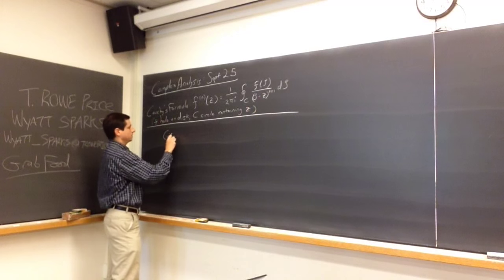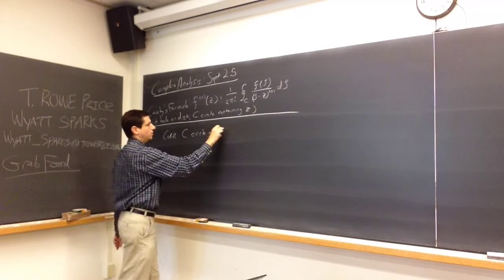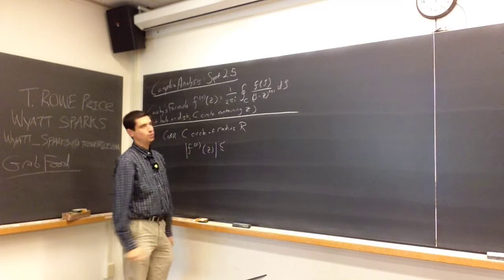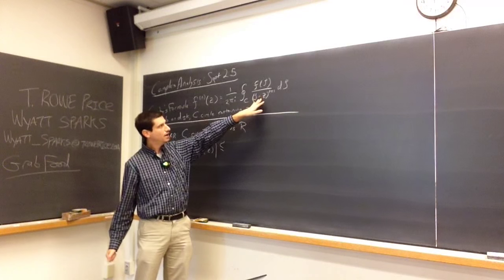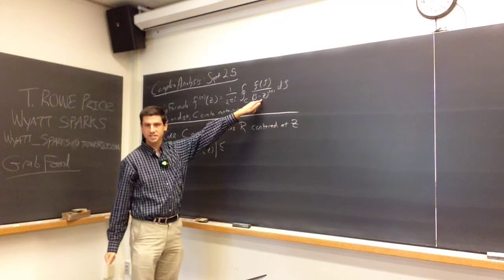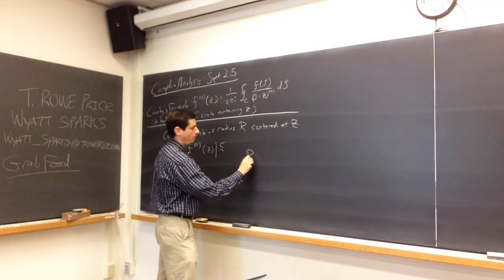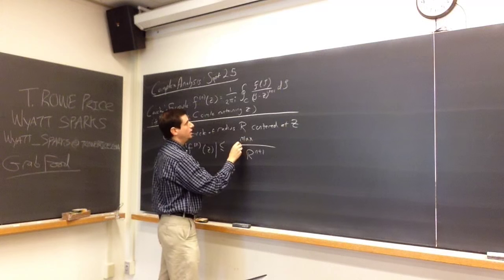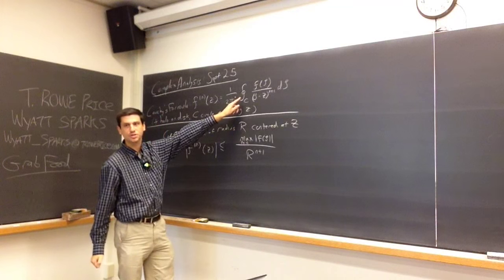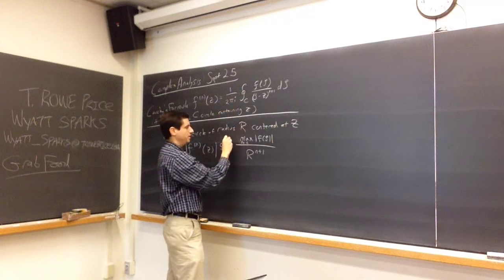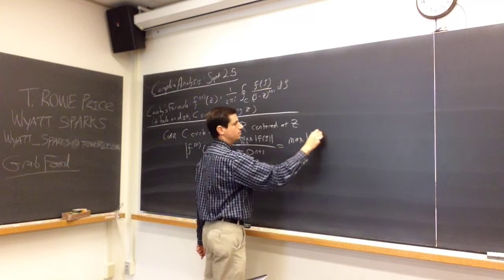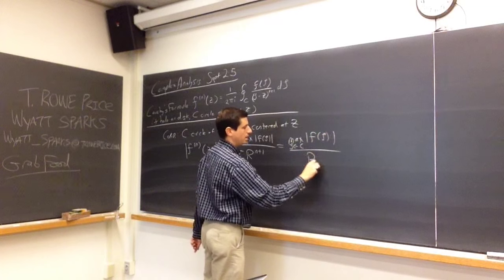Here's a corollary. Let's say c is a circle of radius r. Then the n-th derivative at z in absolute value is less than or equal to what? If we put absolute values, centered at z, then this is going to have distance r, so this will be r to the n plus 1. We'll put the maximum of zeta on the circle of f of zeta. The radius of the circle is r, so the perimeter is going to be 2 pi r, and the 2 pi cancels.